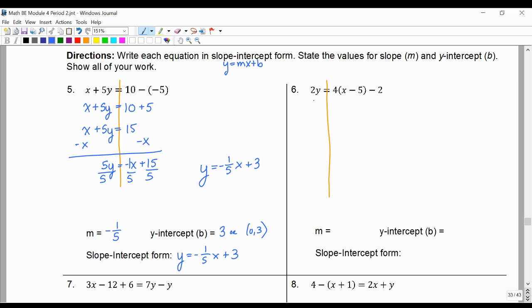Number 6. Again, feel free to pause, rewind. We'll start with distributing. 4 times x is 4x, and 4 times negative 5 is negative 20.